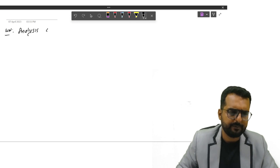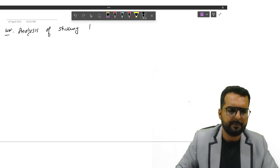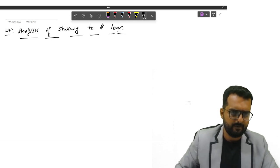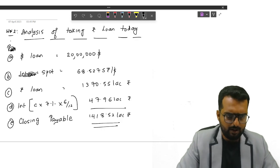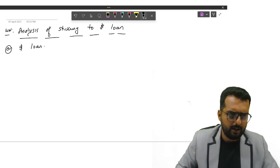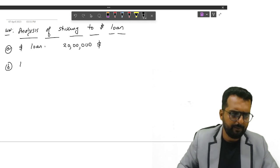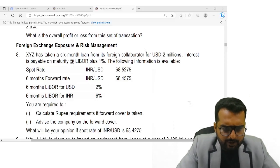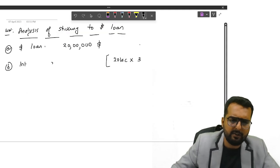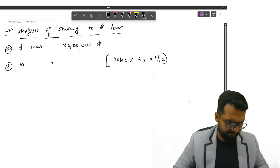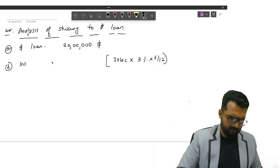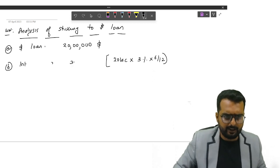Analysis of sticking to dollar loan. Point number A. So here point number A will be my dollar loan. How much is my dollar loan? What about the interest on this? 20 lakh into I think how much percentage have they told? 2 plus 1 will be 3% into 6 by 12.